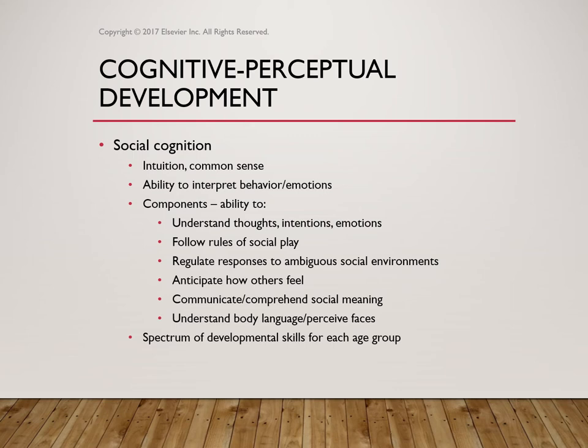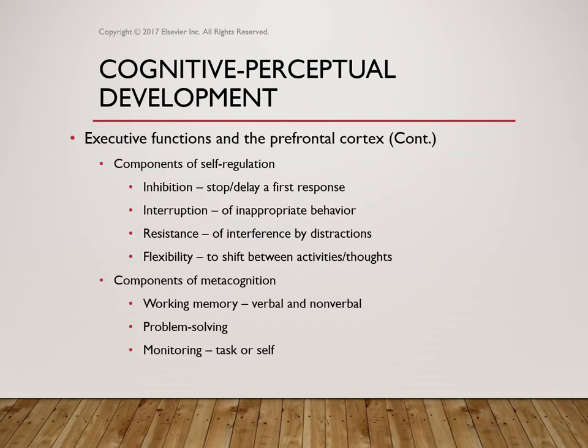There is a spectrum of developmental skills for each age group. We see this with executive functions, the prefrontal cortex, and self-regulation. Key terms: inhibition — the stop-delay, the first response, interruption of inappropriate behavior, resistance of interference by distractions, and the ability to tune that out. Then there's flexibility — can you shift between activities and thoughts? We might call it multitasking as adults, but for children, that flexibility to shift is key.